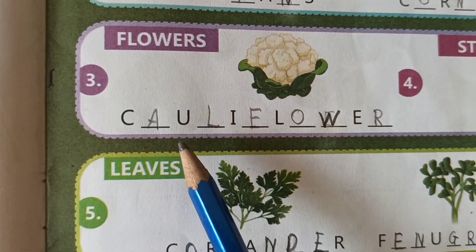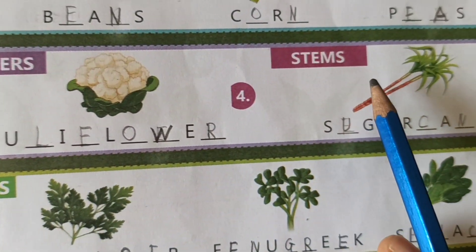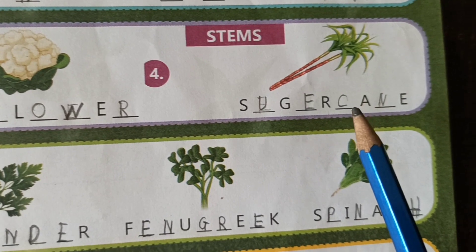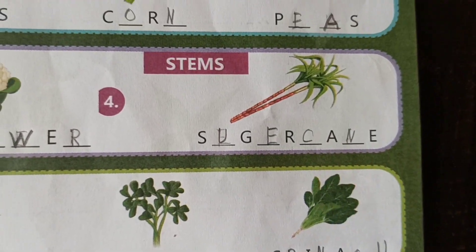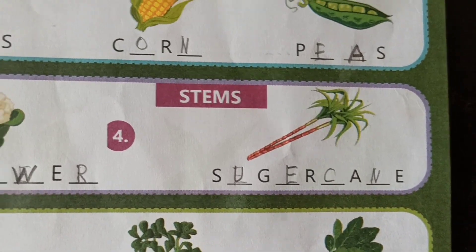Flowers — cauliflower. And stems. Which are they? Sugar cane. It is very juicy and sweet.